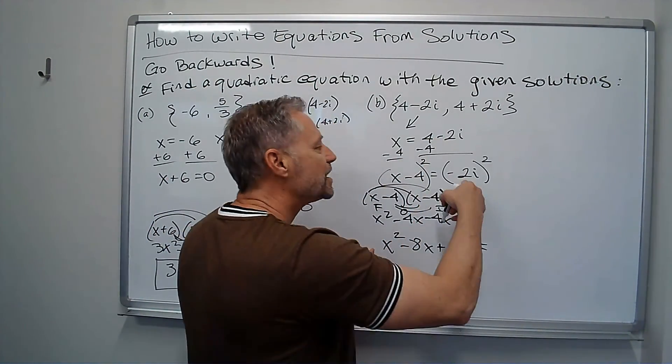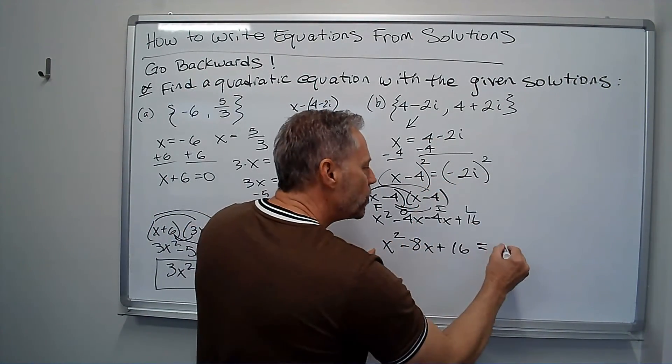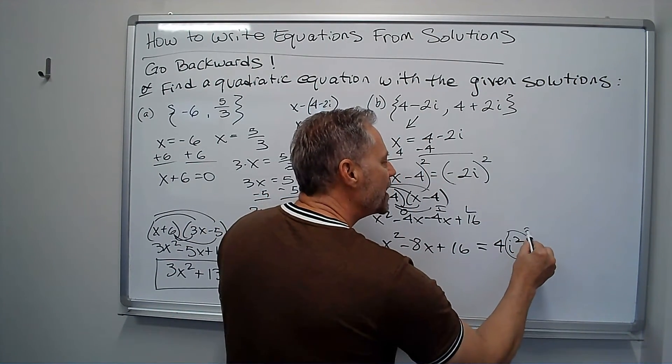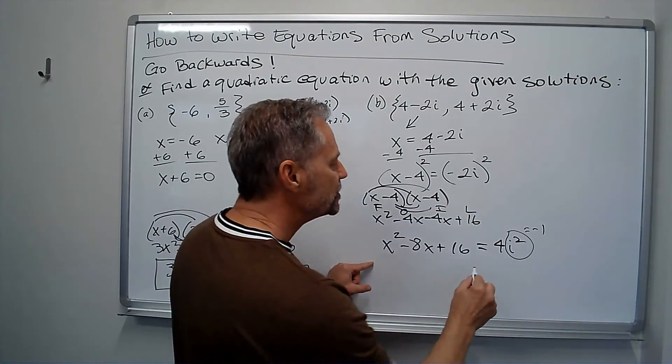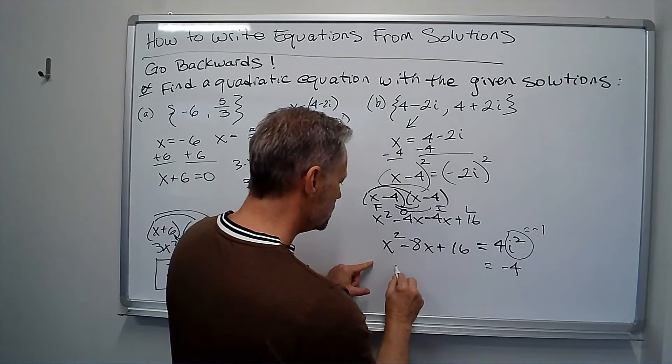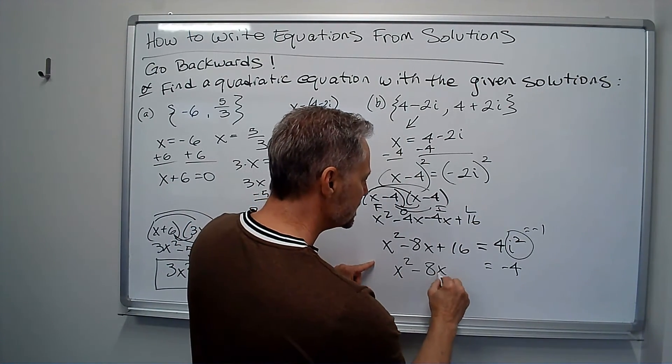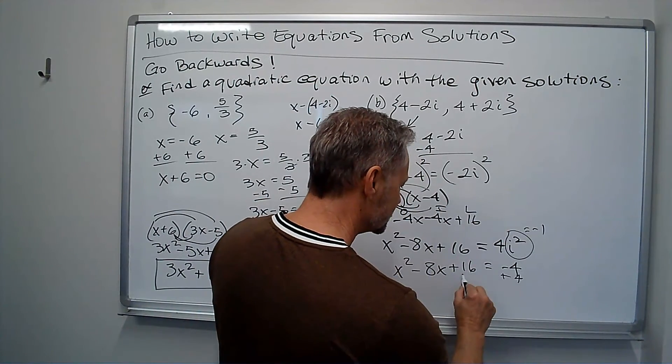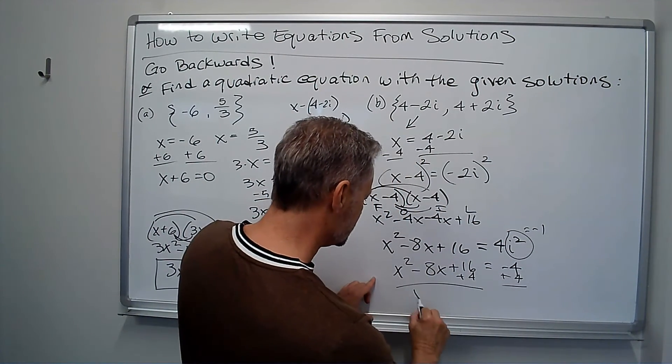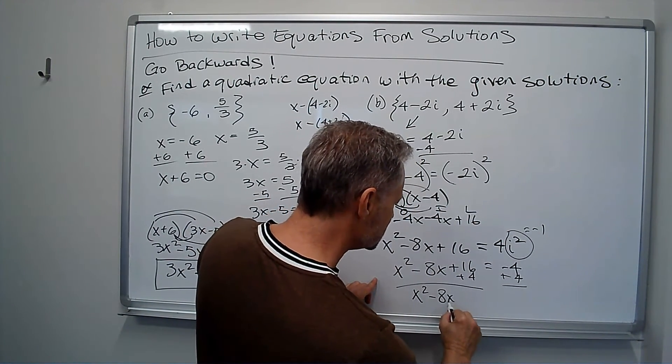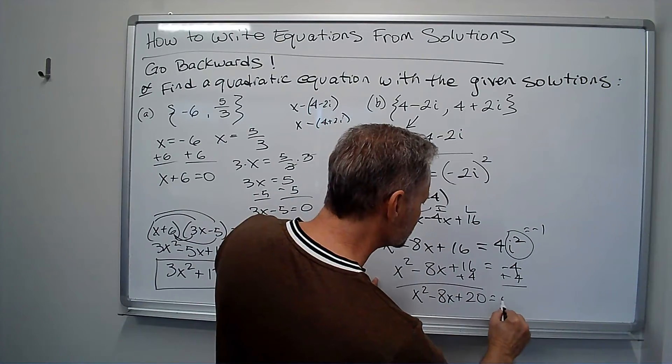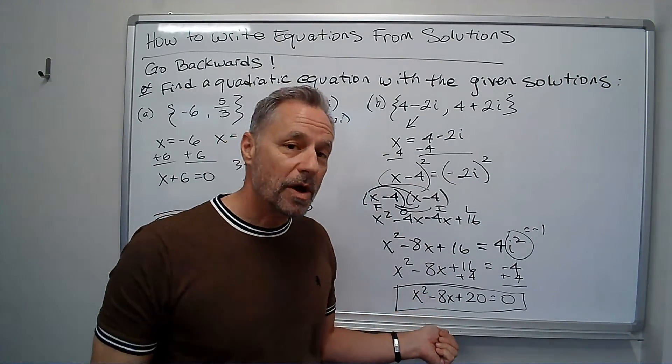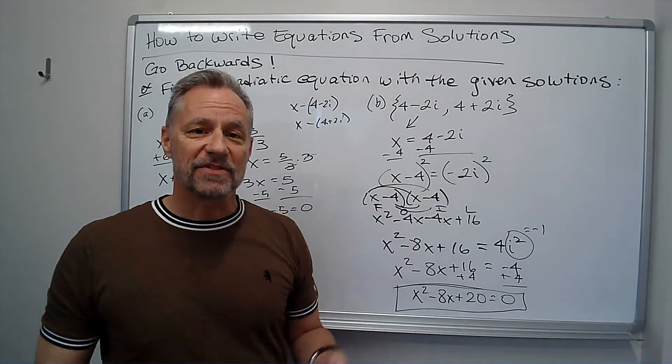But I get that equals, well, on this side, I square that. I get four i squared. But remember, i squared is a negative one. So this whole thing is negative four. x squared minus eight x plus 16 equals negative four. Now, I add four to both sides and I am done. x squared minus eight x plus 20 equals zero. And there's my quadratic equation that would have these two solutions.